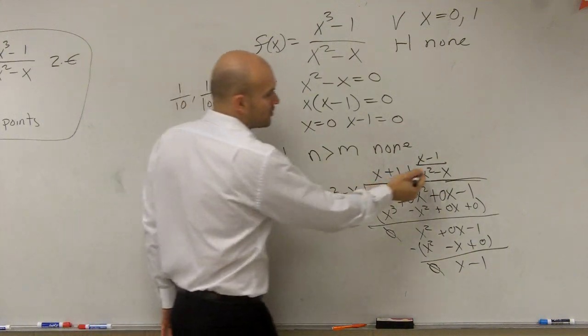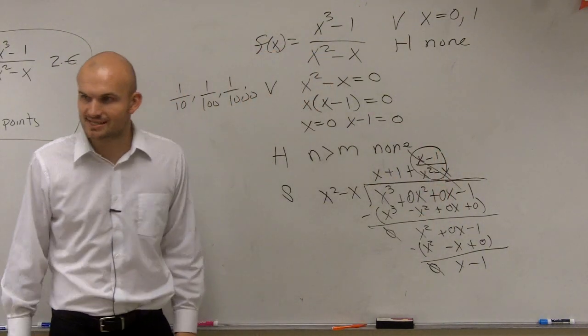0. 0, right? So since it approaches 0, it actually is not going to affect my slant asymptote.